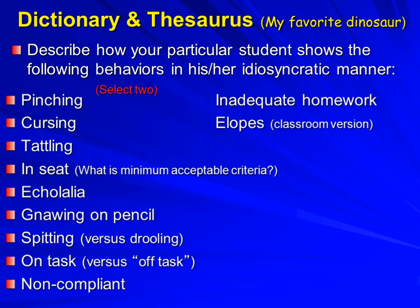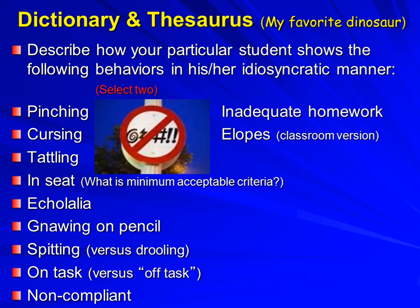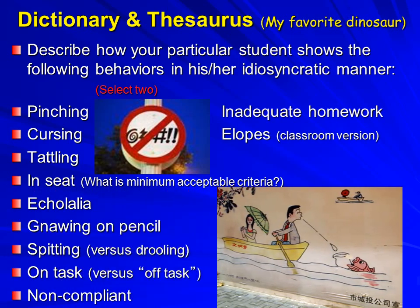Now it's time for you to define a few behaviors. On task — a popular desire of teachers for their students to display. So many tasks and so many ways of being on task. How about 'student is engaged in the directed activity'? How about another popular request: being in one seat. What's the minimal acceptable criteria for being in seat? How about buttocks in contact with horizontal plane of chair, one foot in contact with the floor.